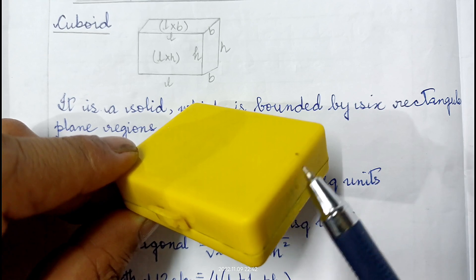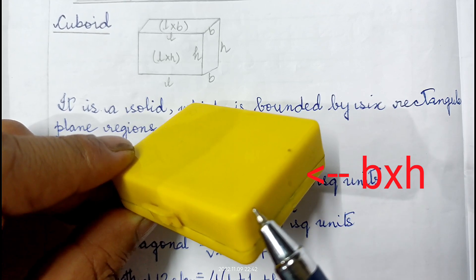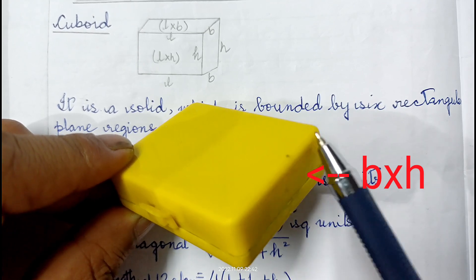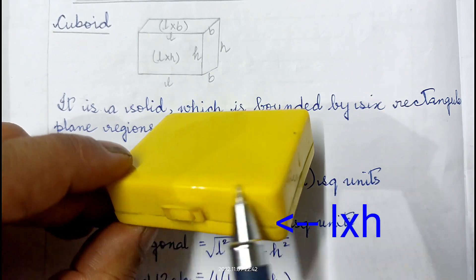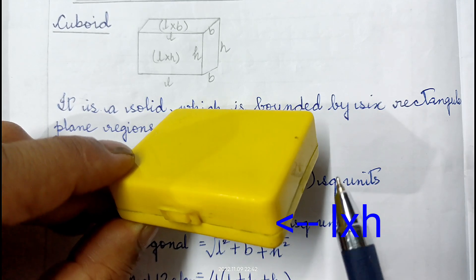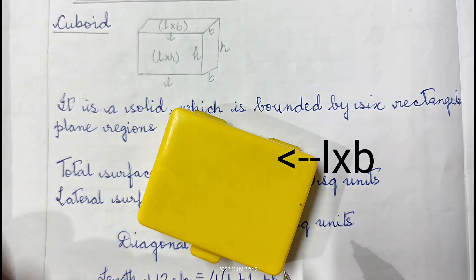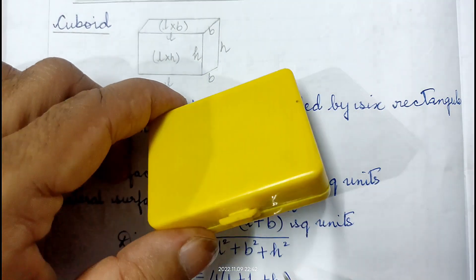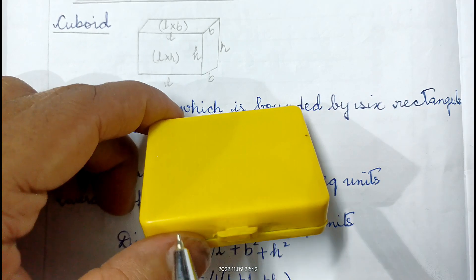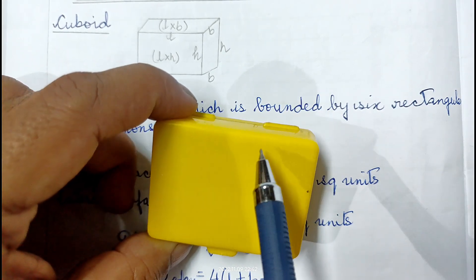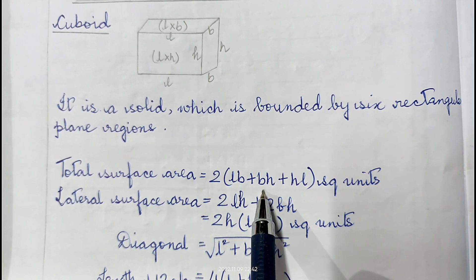For this face the area is breadth into height (B×H). We know area of a rectangle is length into breadth. So for each face: one side is B×H, another is L×H, and the top/bottom face is L×B. There are two of each type of face. So the total surface area formula is 2(LB + BH + HL).